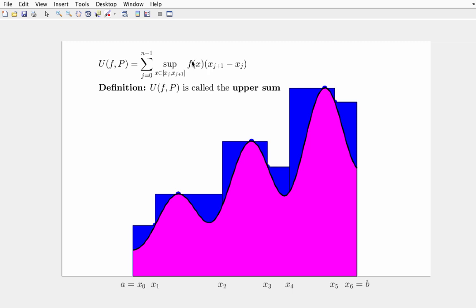we're computing the supremum over a closed subinterval. A closed interval is compact. And a continuous function on a compact domain achieves both a min and a max. So, if f were continuous, we could replace this supremum here with max.